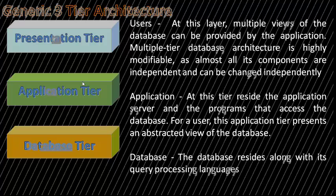The generic three-tier architecture consists of three parts: the presentation tier, application tier, and database tier. Users operate on the presentation tier and know nothing about the existence of the database beyond this layer. At the presentation tier, multiple views of the database can be generated by the application that resides in the application tier. A multi-tier database architecture is highly modifiable as almost all of its components are independent and can be changed independently.